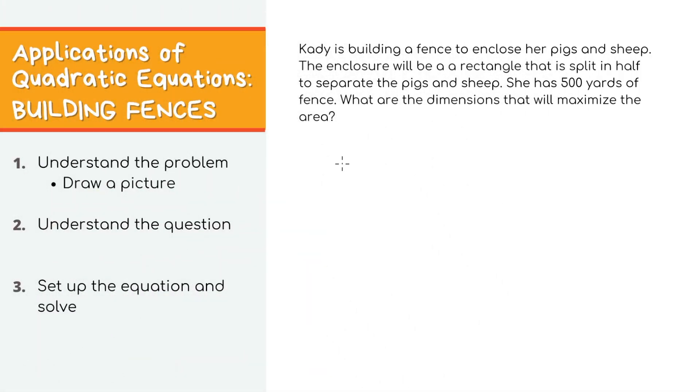Up next, we have these problems where people are building fences to enclose their gardens or animals. Let's first understand the problem. In our case, we have our girl, Katie, who has some pigs and sheep she needs to build a fence for. It's going to look like a rectangle with fence running down the middle to separate the animals. And she has a total of 500 yards of fence. The question is, what dimension will maximize the area? Or in other words, what is the length of each side of the fence that will give you the biggest space inside the fence?